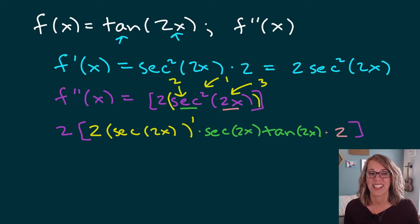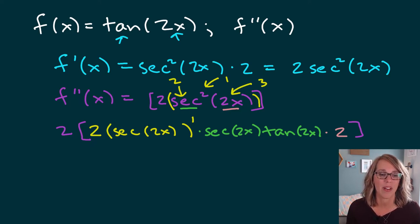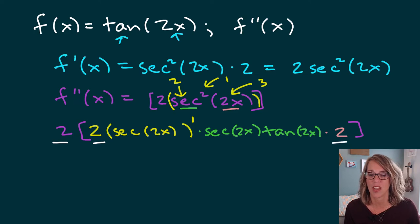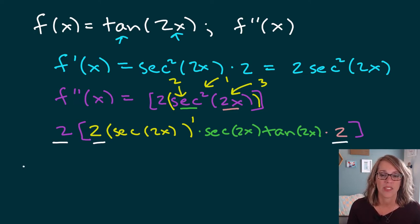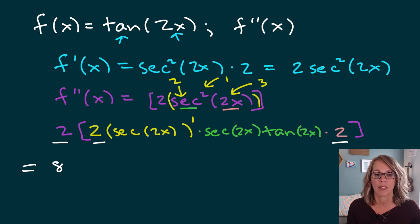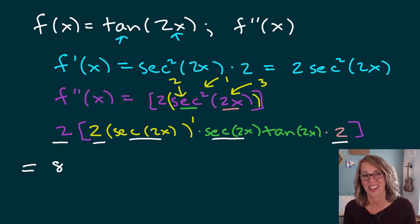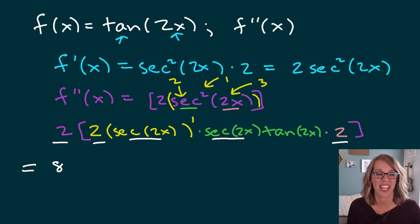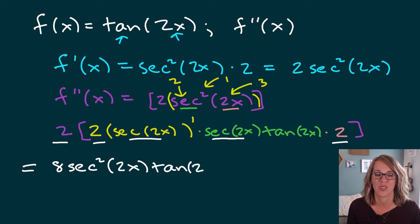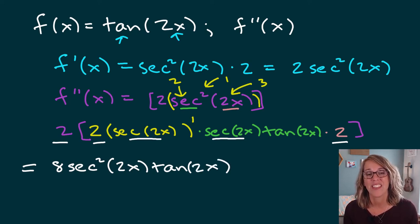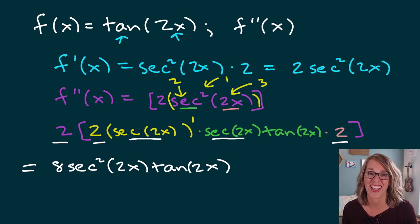There is some cleaning up to do. I have a 2 times a 2 times a 2 — everything is multiplied, so I can regroup. 2 times 2 times 2 is 8. I also have a secant of 2x times another secant of 2x — that's secant squared of 2x — and then I have my tangent of 2x. So the final answer is 8 secant squared 2x tangent 2x. I hope these are getting better for you. The nice thing is that you're just applying the rules of derivatives you've seen before. Take a look at my other videos, and let me know if you've got any questions. Good luck, and thanks for watching.